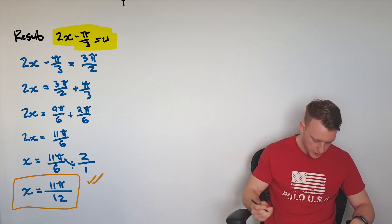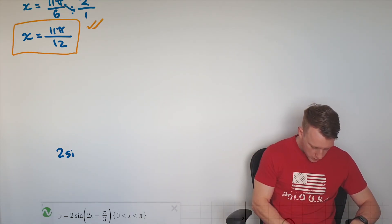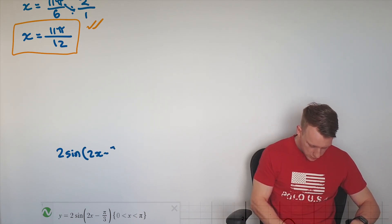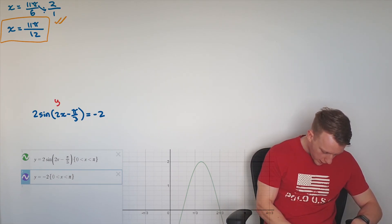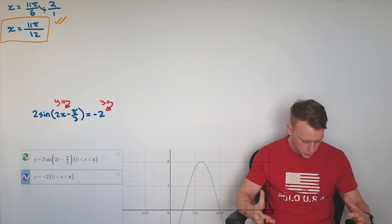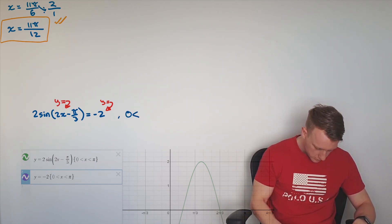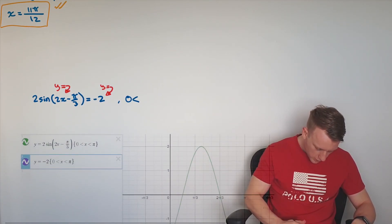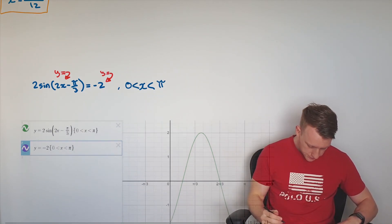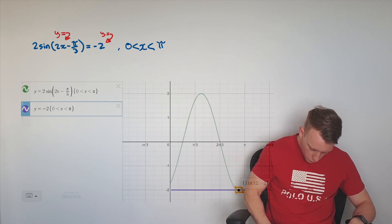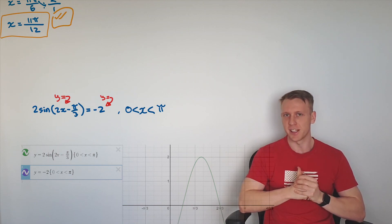That is our solution for x — the only solution because we only had one value for u. We can verify this visually: the original equation was 2 sine of 2x minus π/3 equals negative 2. Setting y equals 2 sine of 2x minus π/3 and y equals negative 2, within the domain 0 to π, they have one overlapping point at 11π/12, confirming our solution. Always double-check your trig equations visually.